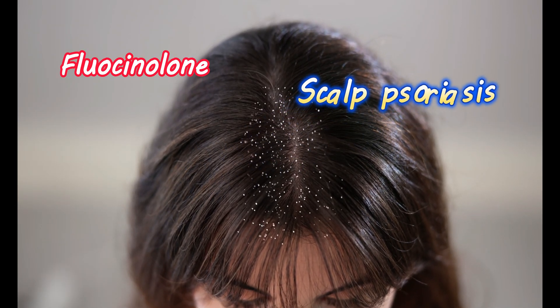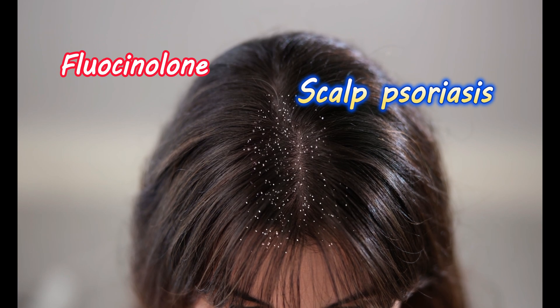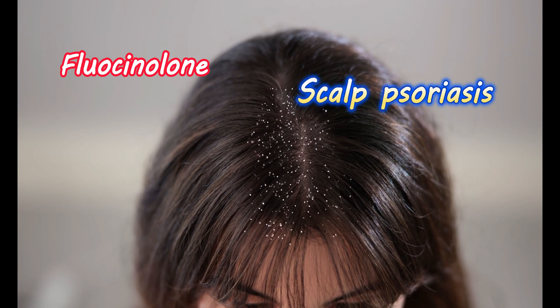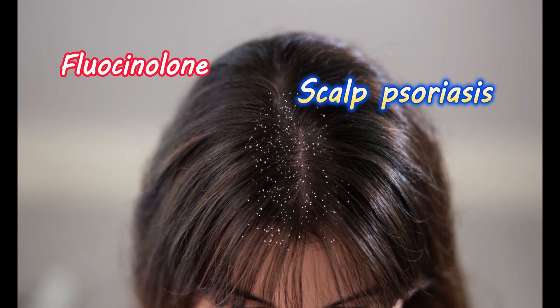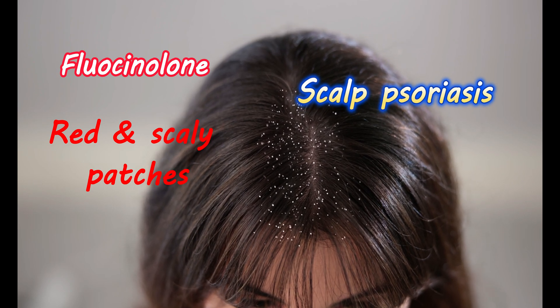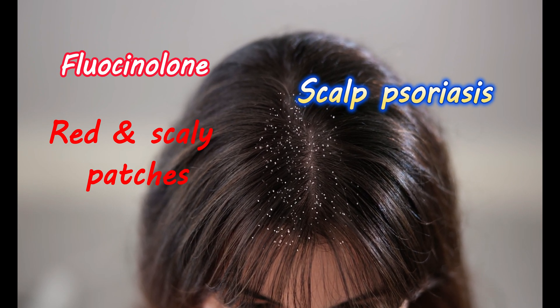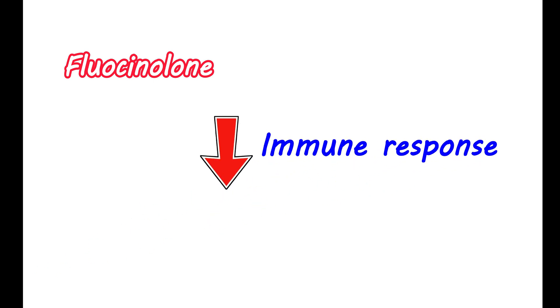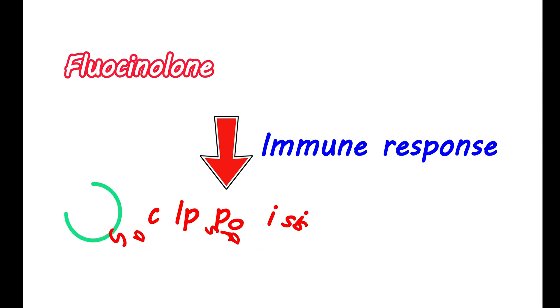Fluocinolone can also be used for treating scalp psoriasis. This is an autoimmune condition that induces inflammation on the scalp, resulting in the formation of red and scaly patches. Dryness, itching, and hair loss may also be observed. Fluocinolone can suppress immune responses and help control inflammation, so when applied topically, it can reduce the severity of scalp psoriasis.